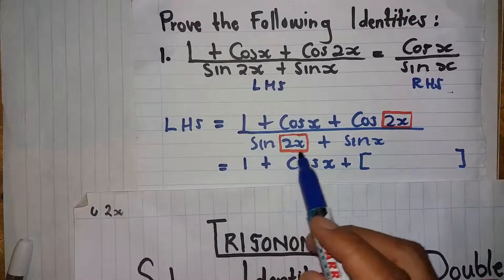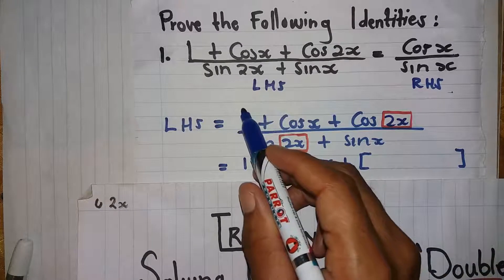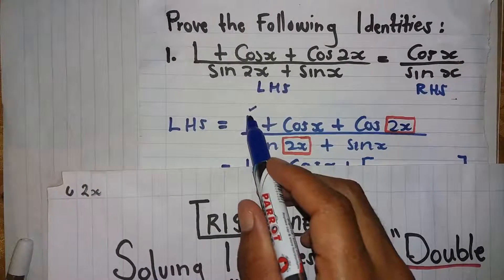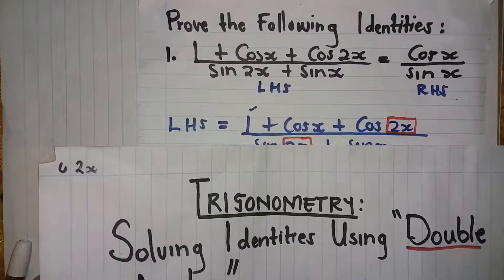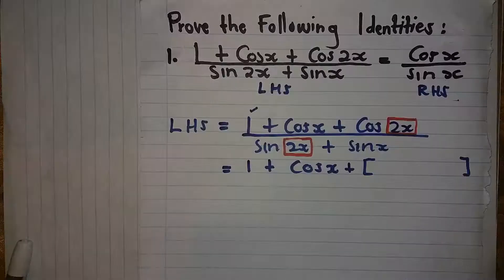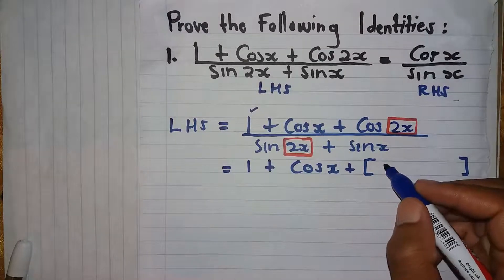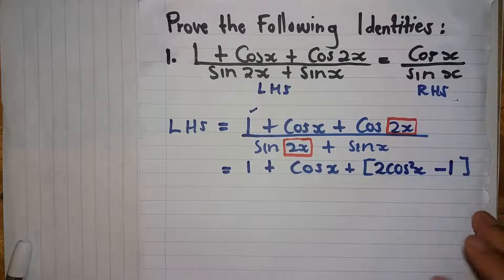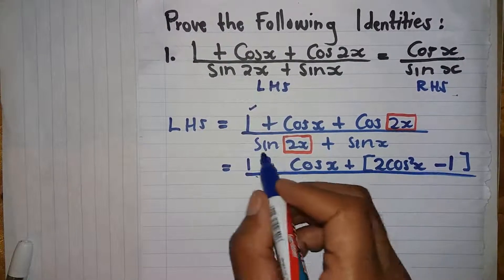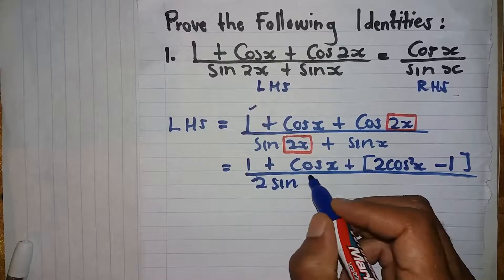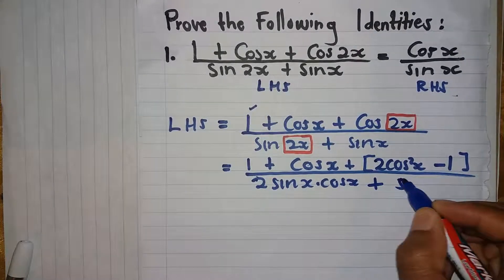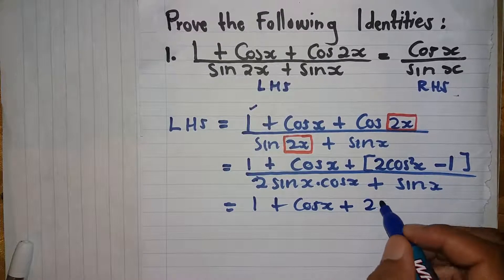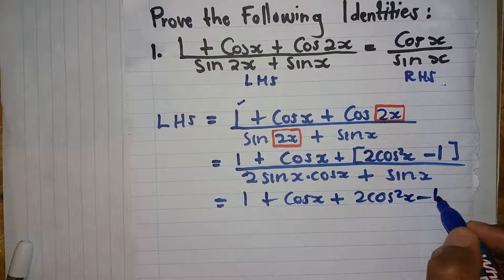My advice: whenever you solve identities, especially with double angles, use the one identity that matches your problem. In this case, for cos 2x on the numerator, we'll use this particular identity. So we substitute: it's going to be 2 cos squared x minus 1. On the bottom, it's 2 sine x times cos x plus x.